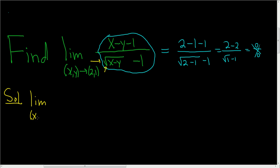So we're going to take the limit as x, y approaches the point 2, 1. And we have x minus y minus 1. And in the denominator we have the square root of x minus y minus 1.